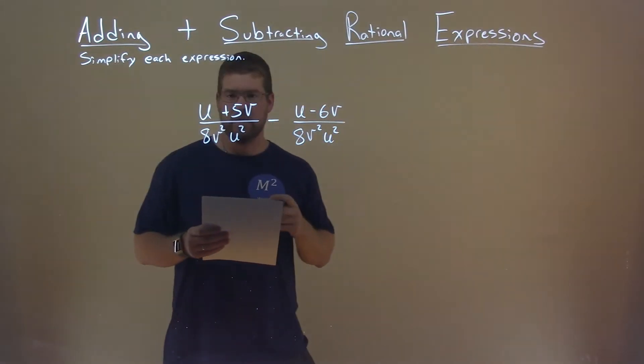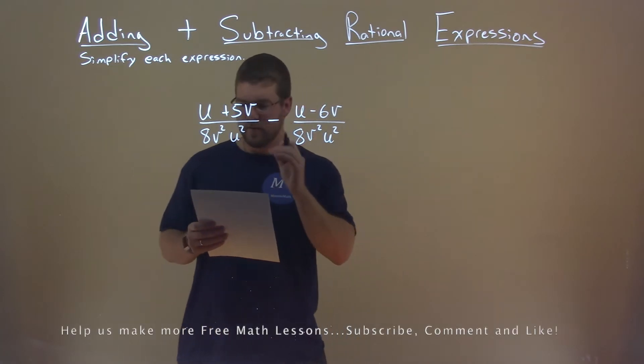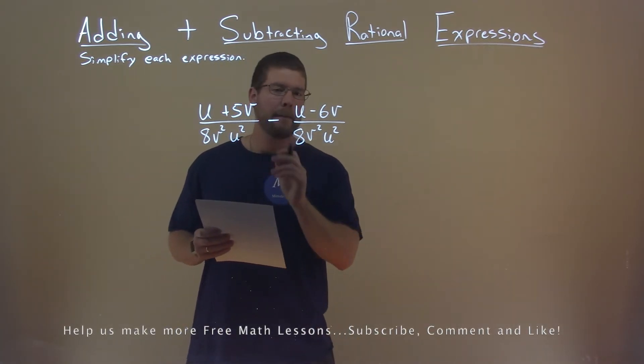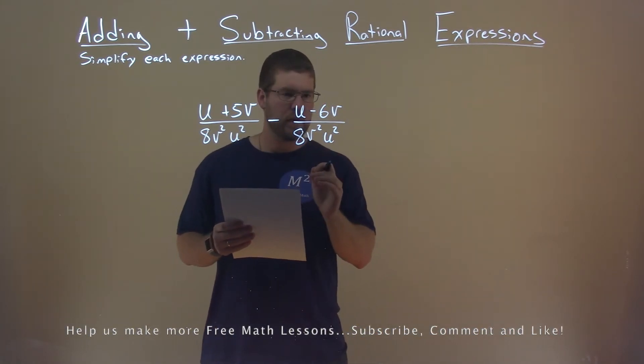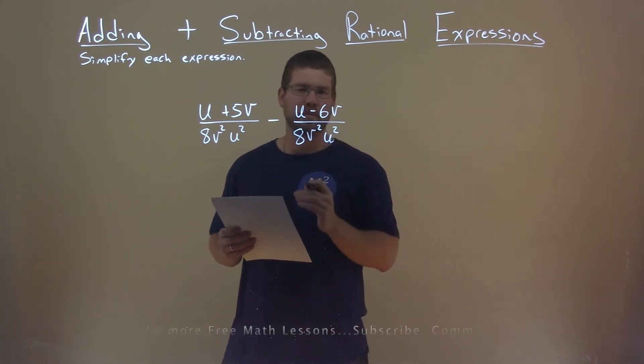We're given this problem right here. u plus 5v divided by 8v squared u squared minus u minus 6v divided by 8v squared u squared. And we need to simplify this expression.